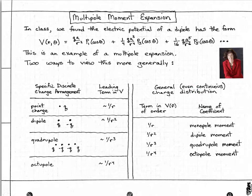In that case, there will be many different terms in the potential, and we give a name to the coefficient of each separate term in the potential. And so the coefficient of the term that depends on 1 over r is called the monopole moment of the charge distribution.